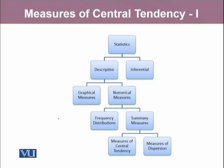Among these numerical measures, there are frequency distributions. The other methods which are commonly used are the summary measures. There are two types of summary measures that we use to describe our data: they are called measures of central tendency and measures of dispersion.